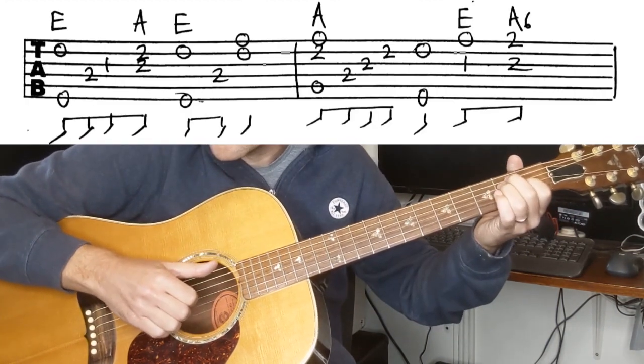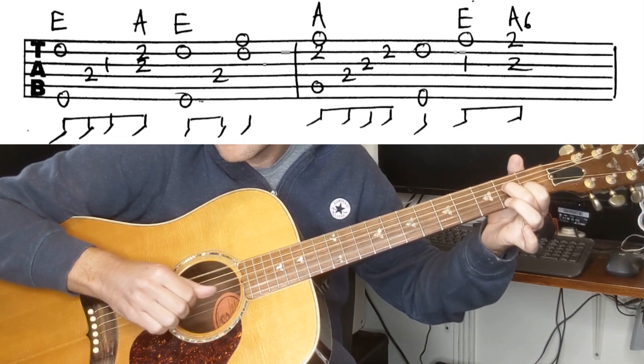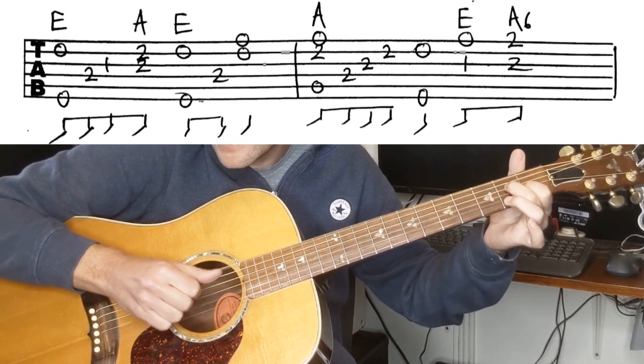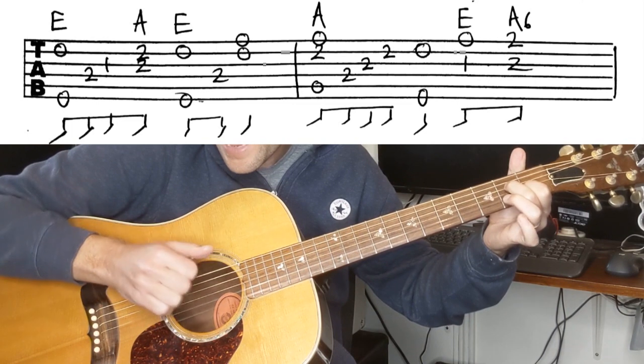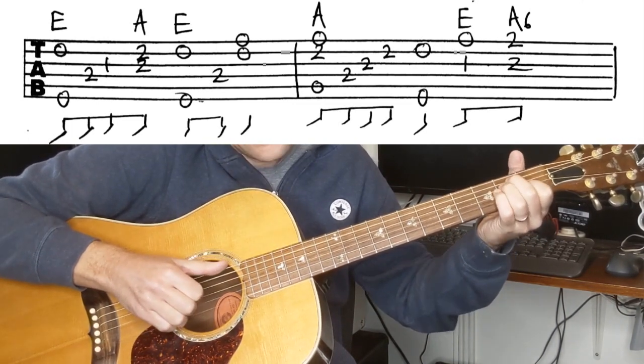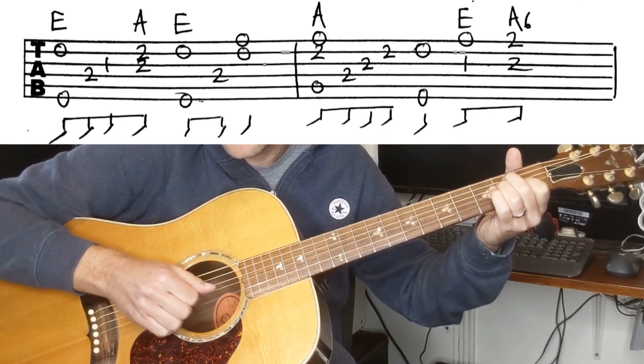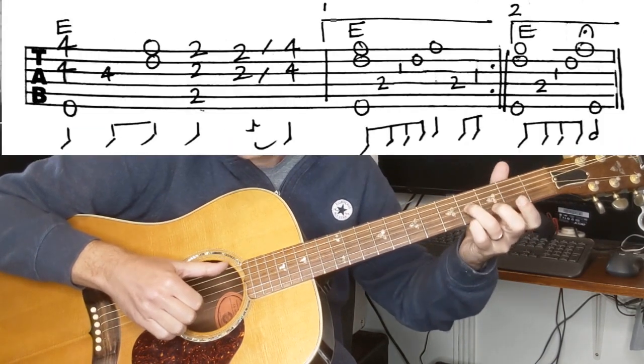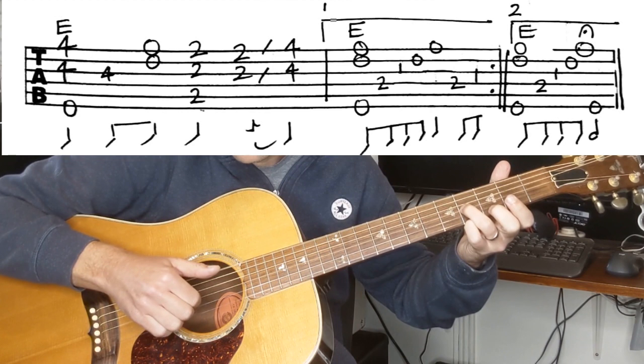So that was the sixth line. We've got E, A, E, A, E, and then we do that big walk up. And last line here.